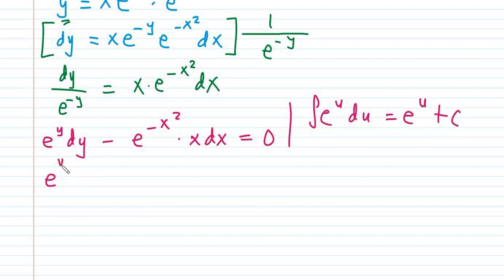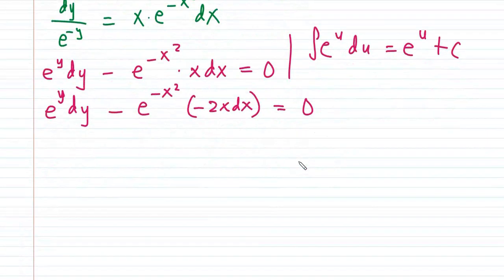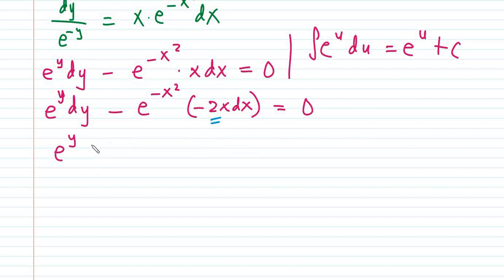Let's simplify the second term. For e raised to negative x squared, the differential of negative x squared is negative 2x dx. For our answer, we have e raised to y, and here we have 2, so our balancing factor is negative one half, which makes it plus one half.